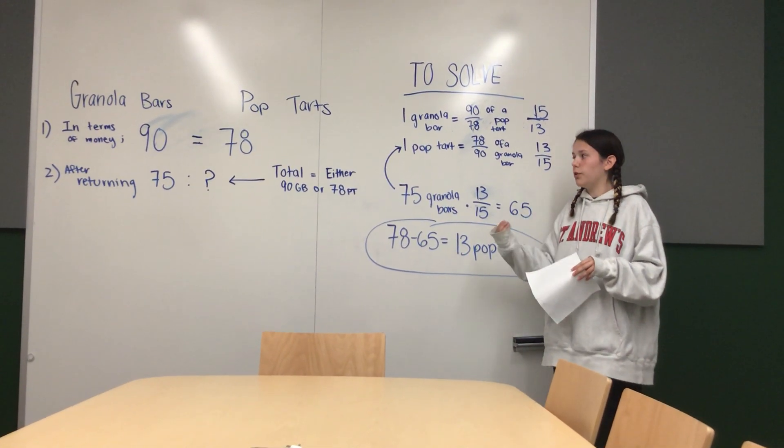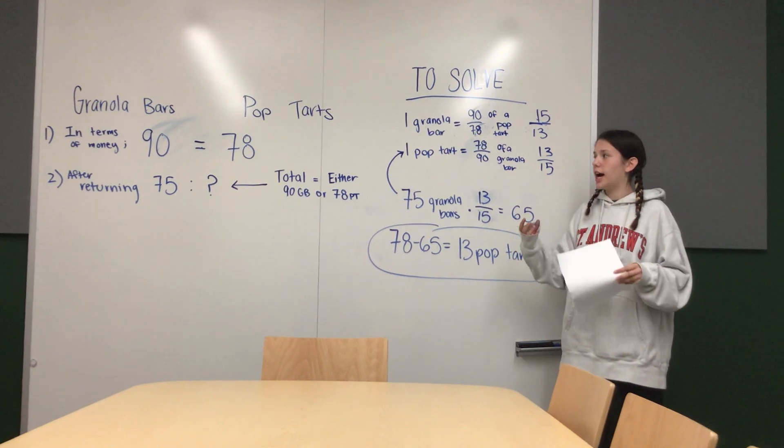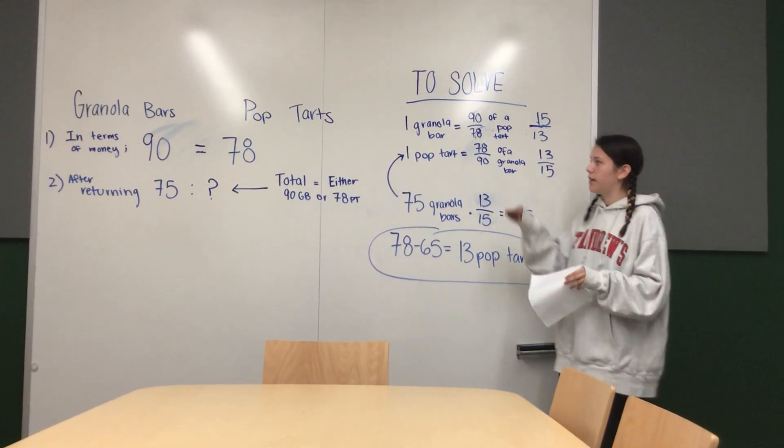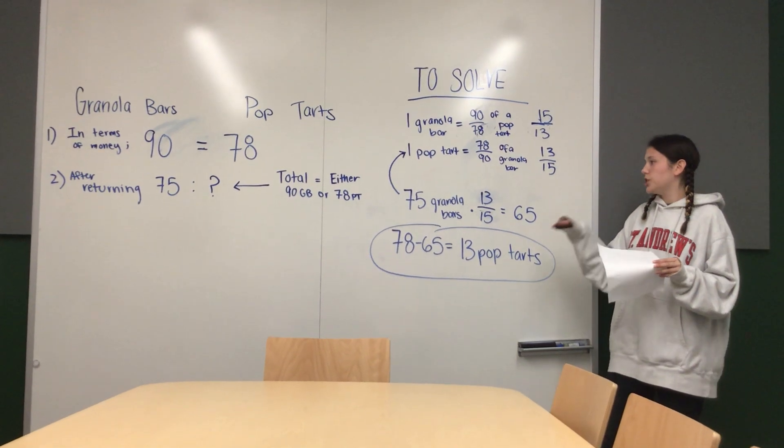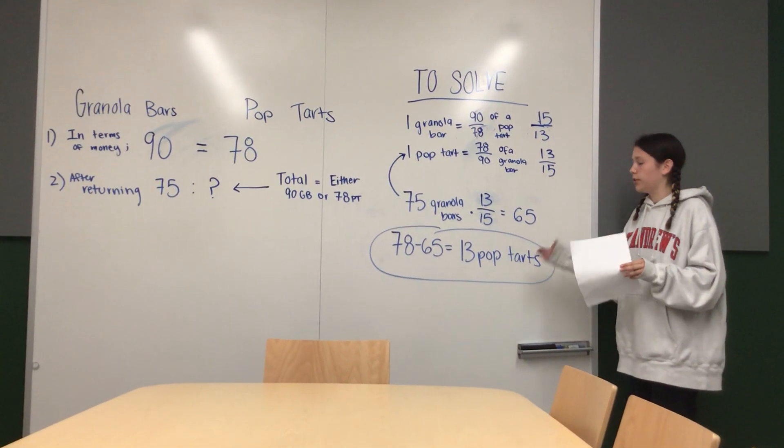And then to find the total amount that she bought with the money she had remaining, you subtract 65 from the 78 total possible Pop-Tarts to get she has 75 granola bars and 13 Pop-Tarts.